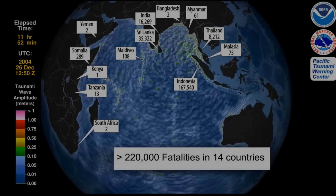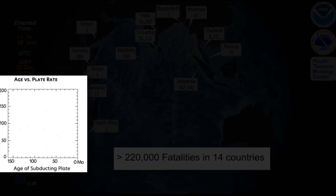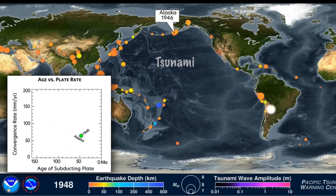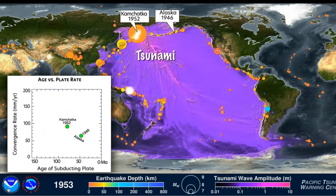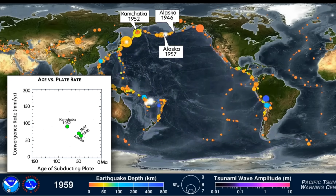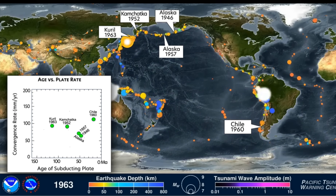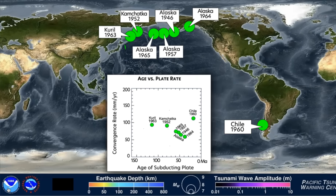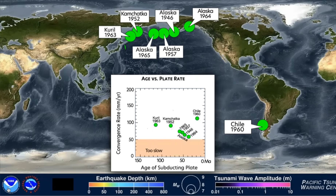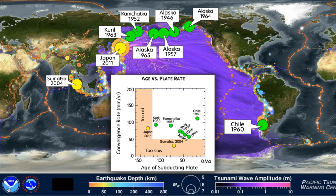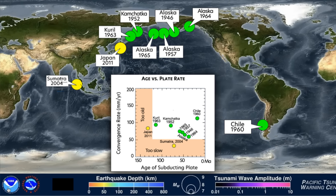Why was this horrific natural disaster a surprise to the scientific community and nations of the region? From 1946 through 2003, all massive tsunami-generating subduction zone earthquakes occurred around the Pacific Ocean. Furthermore, it appeared that some subduction zones had convergence rates too slow or subducting plates too old to produce earthquakes greater than magnitude 8.5. The Sumatra 2004 and Japan 2011 earthquakes taught us that, given enough time, perhaps all subduction zones can produce devastating megathrust earthquakes and deadly tsunamis.